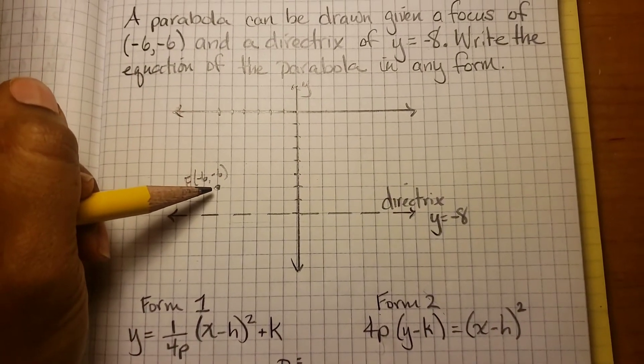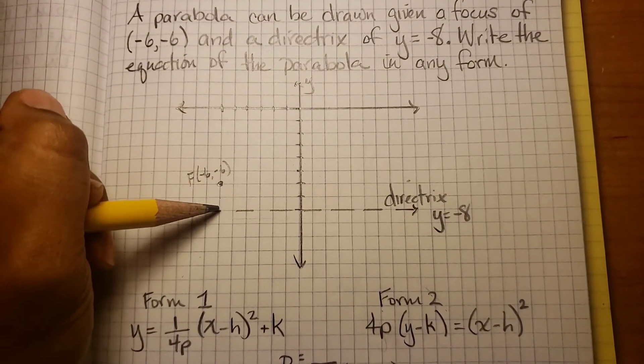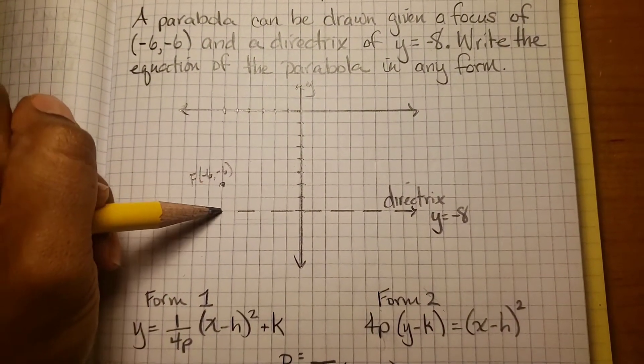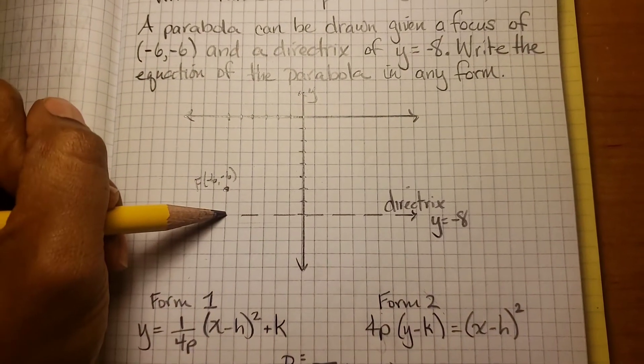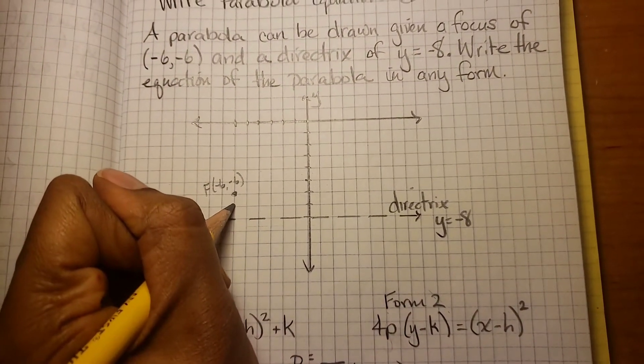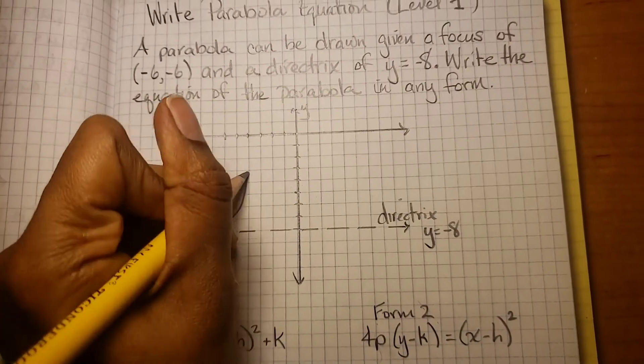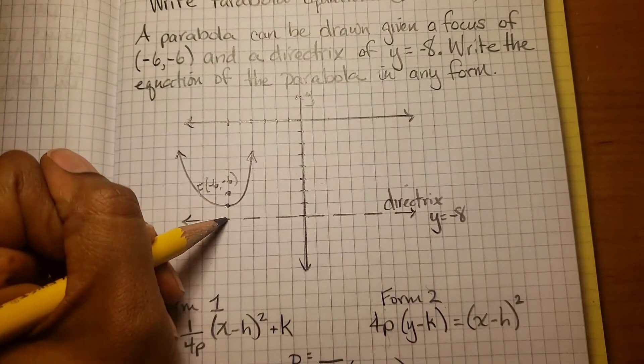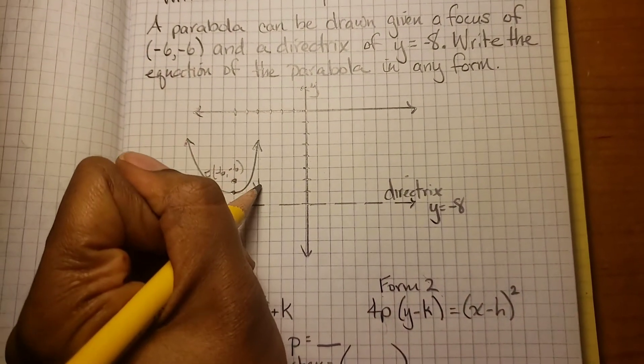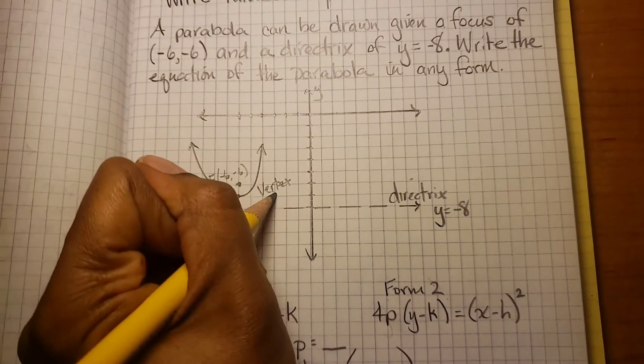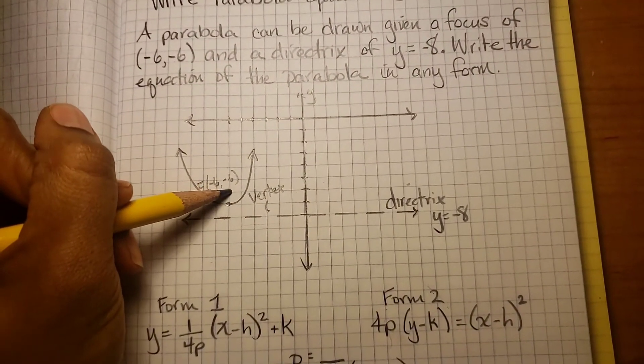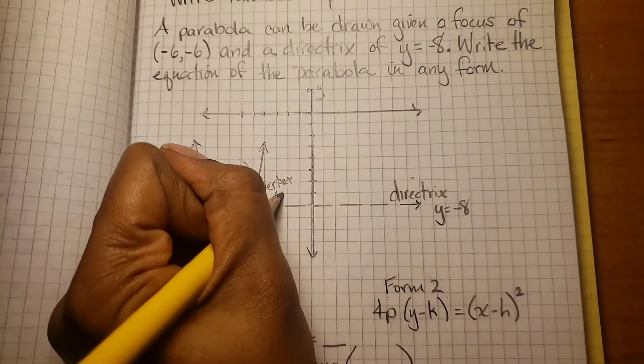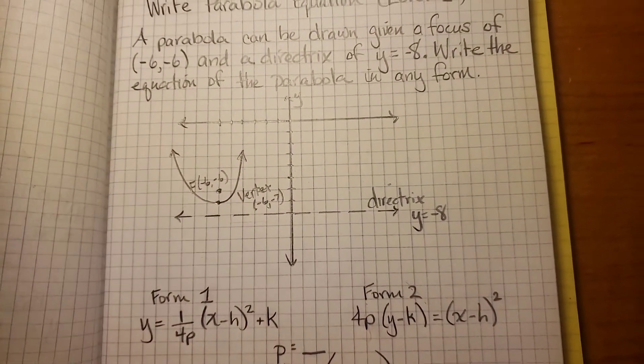So where is the vertex? The vertex is always halfway between the focus and the directrix. And because I'm using graph paper, this makes it a lot easier. I can see that my vertex is just one unit down. So what's the coordinate of the vertex? Well, this is -6, so you go down 1, to -7. (-6, -7). There's my vertex.